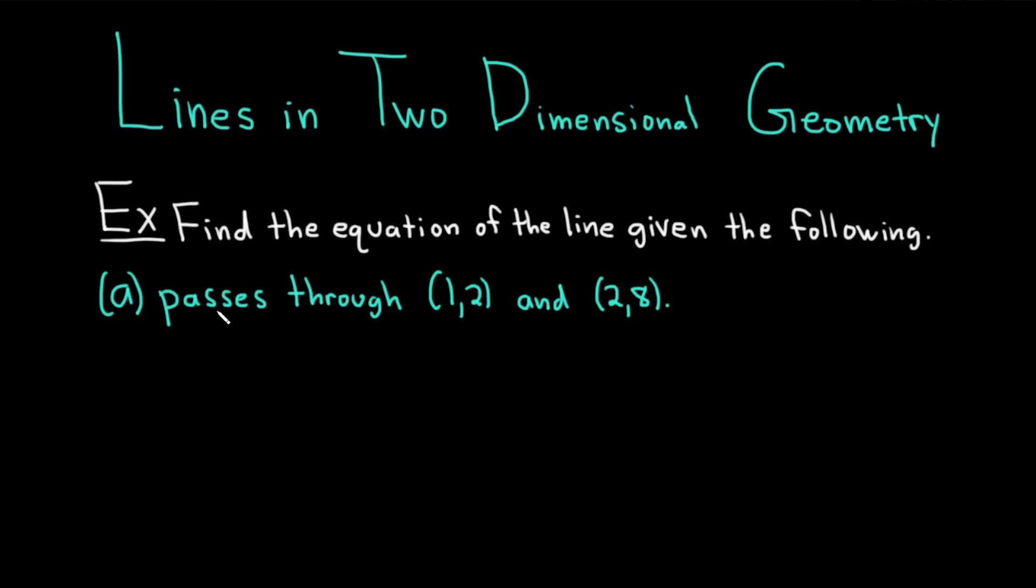In Part A, we're told that the line passes through two points, (1,2) and (2,8). Let's work through this solution.